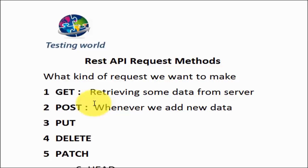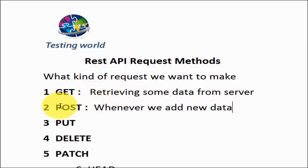Later in this course we are going to use the Jira API. Everyone is aware that Jira is a bug tracking tool. Whenever we want to get details of any bug, we use GET method, but whenever we want to add a new bug to Jira, we use POST method.